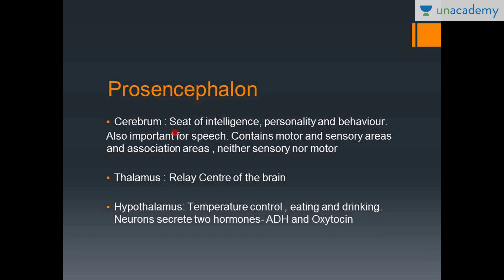The prosencephalon — the cerebrum is the seat of intelligence, personality and behavior. The cerebrum is made up of convolutions which are the gyri and the sulci. It contains motor, sensory and association areas. There are certain areas that control the motor function, certain areas that control your sensory functions, and certain areas that associate these two — called the association areas. You also need to know that it is made up of gyri and sulci.